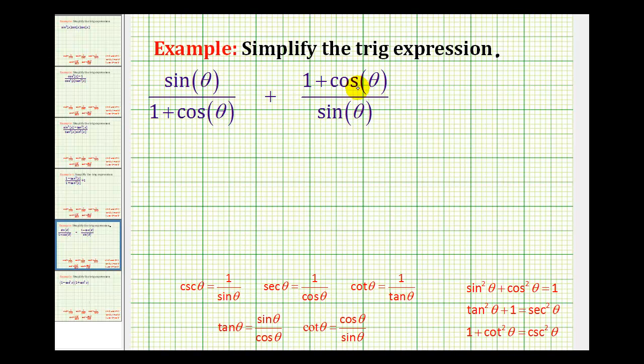Here we have another example of simplifying a trig expression. Notice how everything is already in terms of sine and cosine and that none of the trig functions are squared, so there aren't any obvious substitutions.